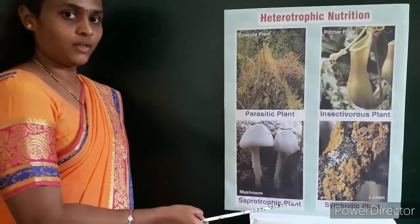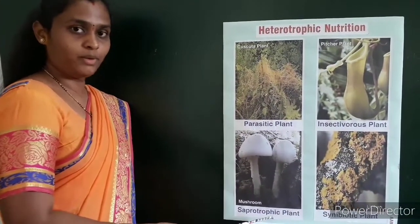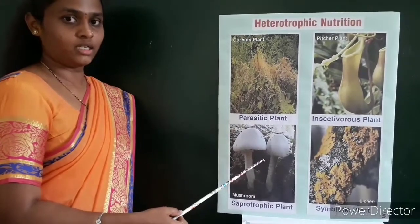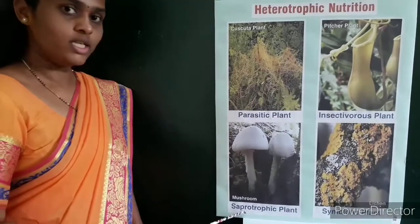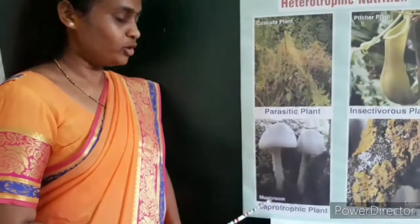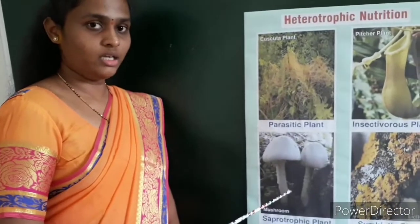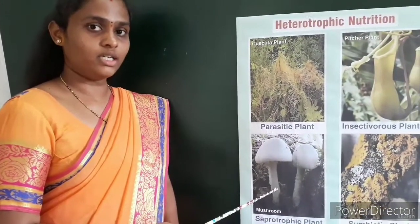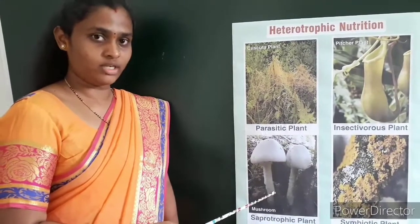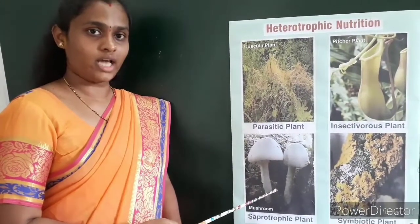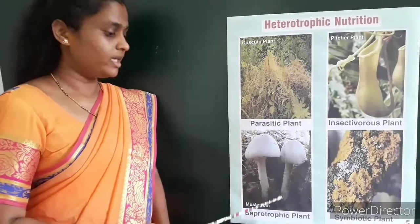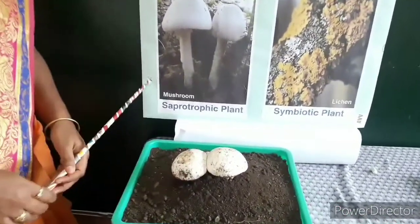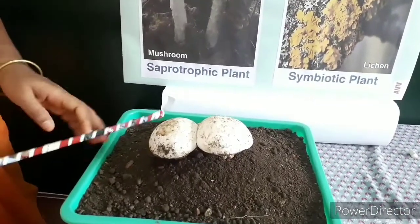Third, saprotrophic plants. Saprotrophic plants are the plants which gain their nutrients from dead and decaying matter. The best example for a saprotrophic plant is mushroom. When they start gaining the nutrients, they convert the matter into liquid form and then start absorbing the nutrients. You might have seen that whenever a tree trunk has fallen on the road, after two or three days there is growth of mushrooms. These mushrooms start gaining nutrients from the dead and decaying matter.